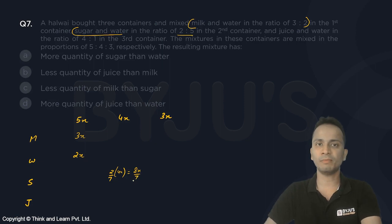Water is 5 parts, so that means 5 by 7 of 4x, which is 20x upon 7. This is water in the second container.